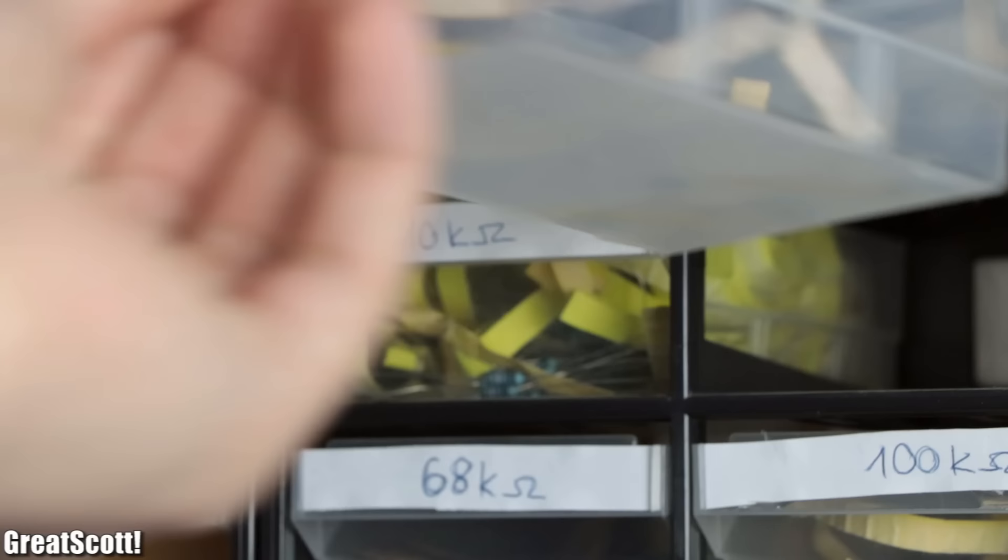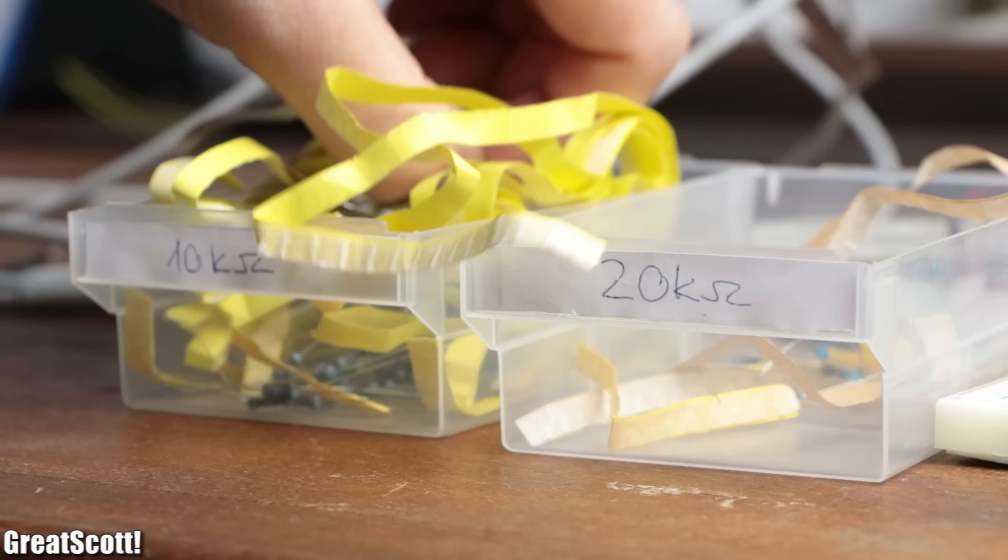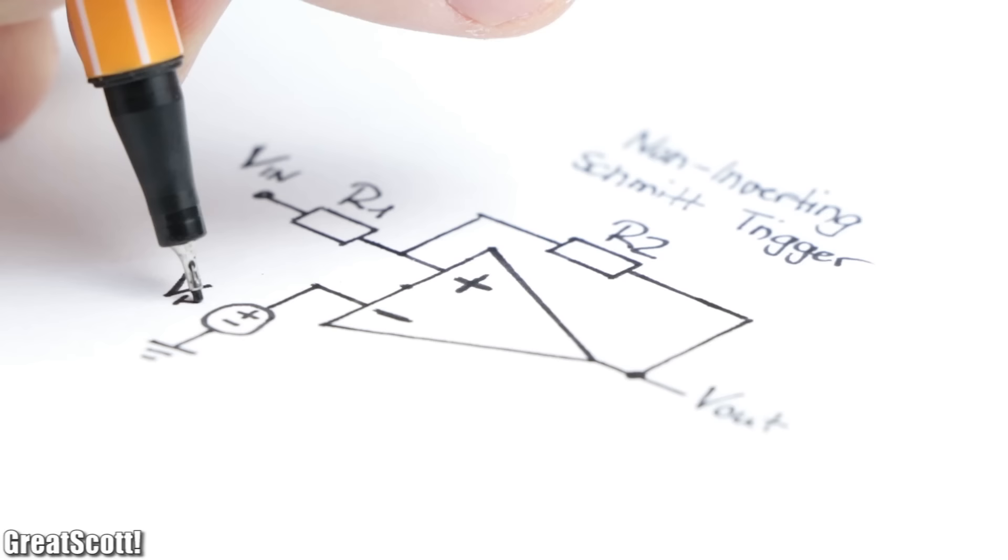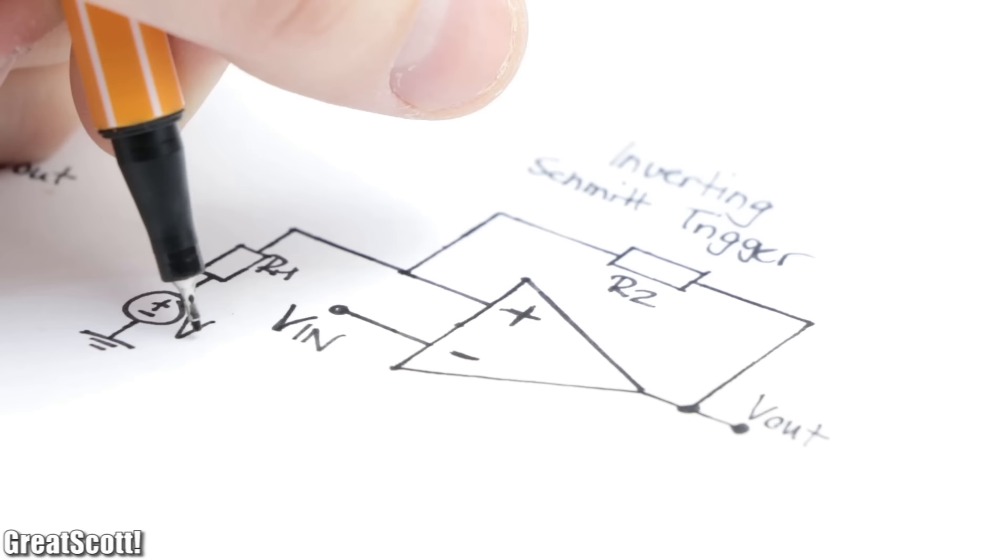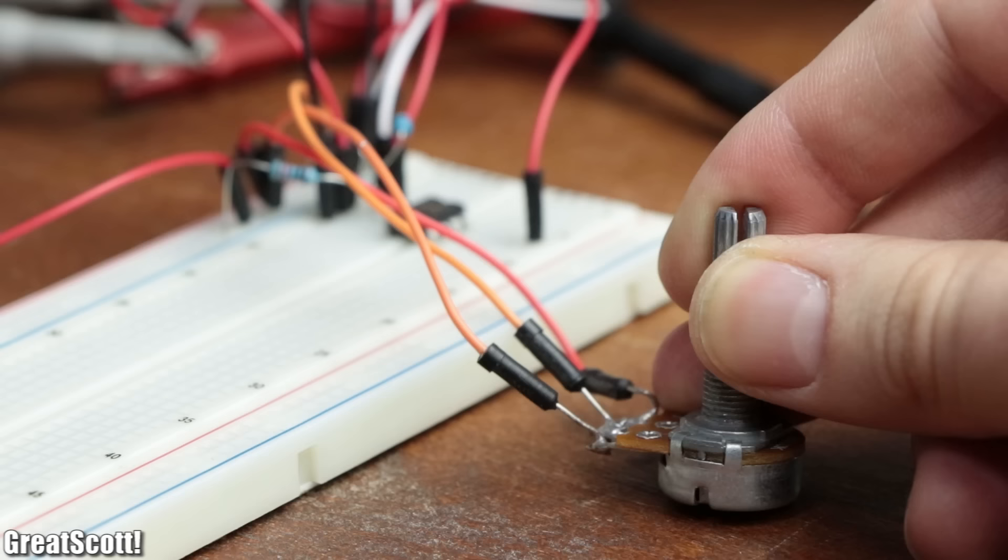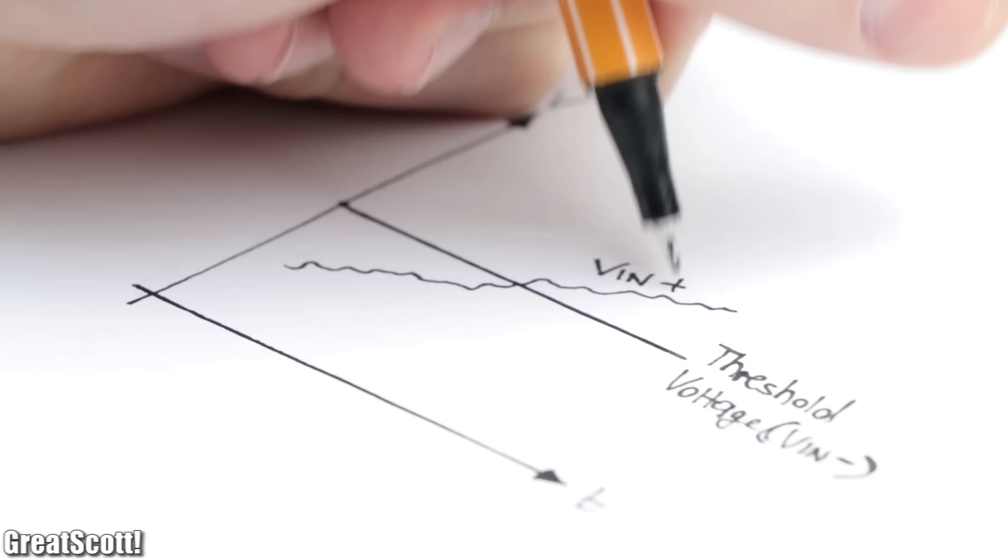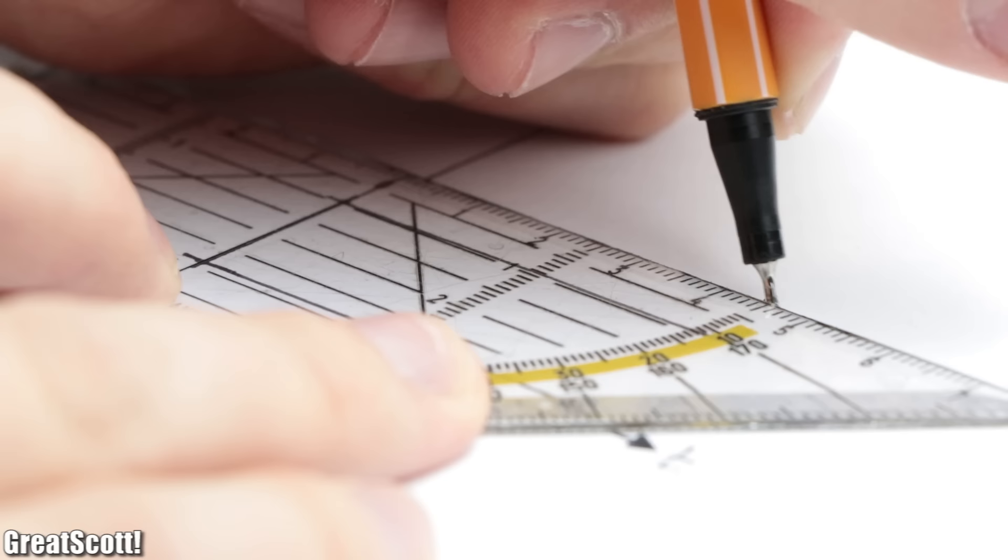All we need to turn our comparator into a Schmitt trigger is a couple of resistors. And depending on how we connect them to the comparator, we can create a non-inverting or an inverting Schmitt trigger. But what is the function of such a Schmitt trigger to begin with? Well, as I said before, with a comparator we got one threshold value which determines whether the output is high or low.